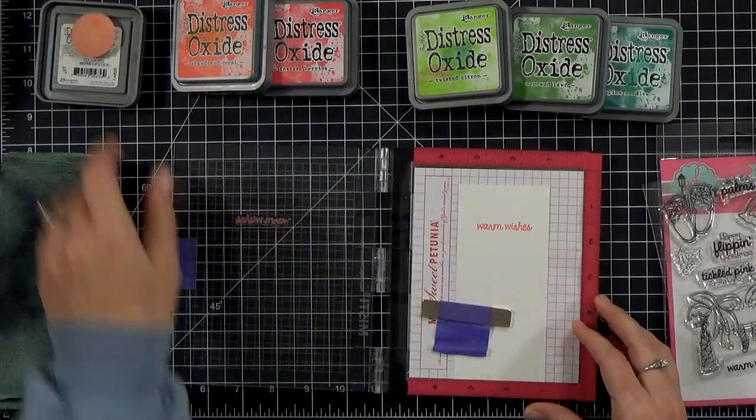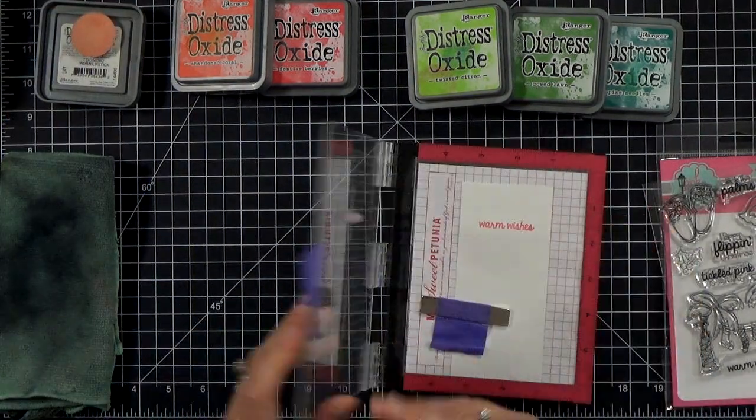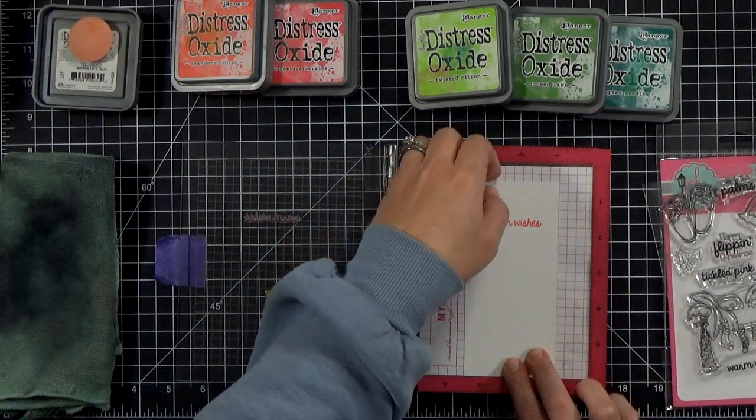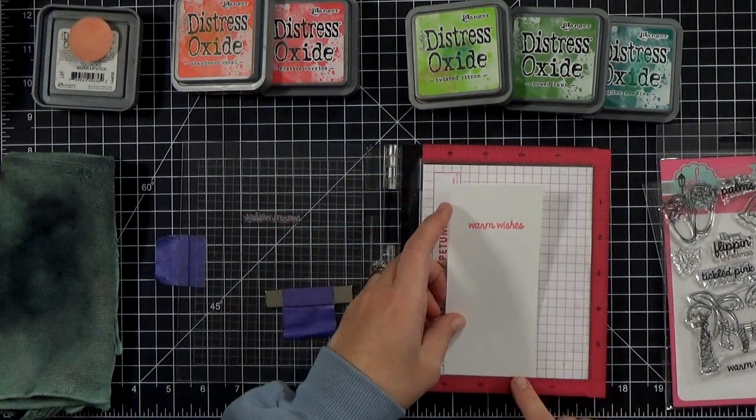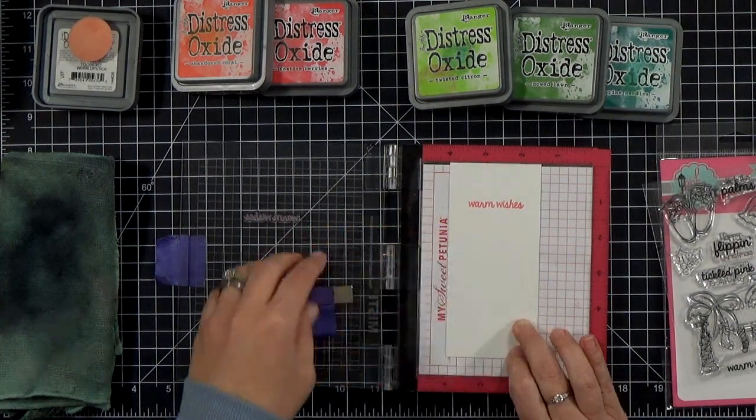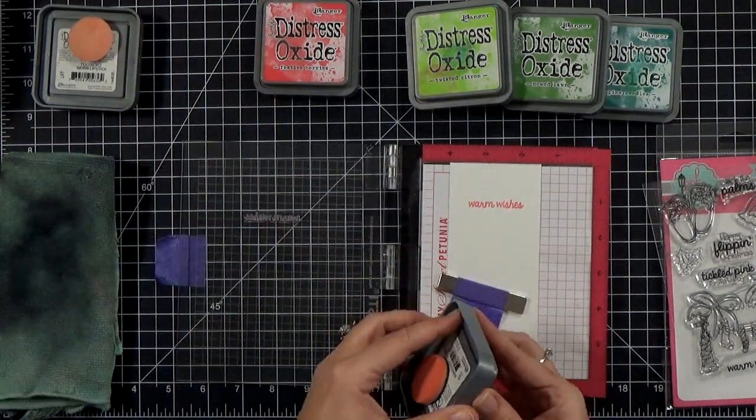But for the most part I stamped everything with the stamp in this one position. And I just went ahead and moved the cardstock up and over two squares at a time. And that worked perfectly for this sentiment.